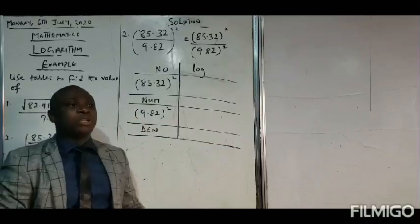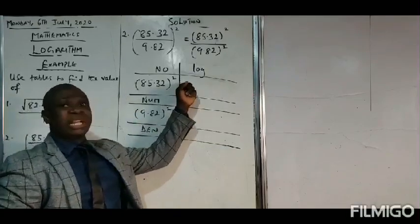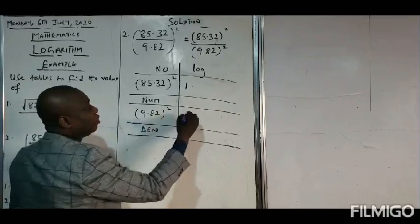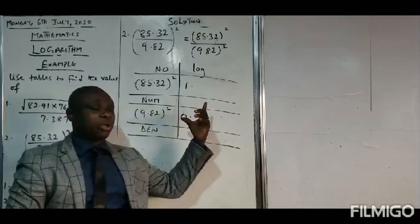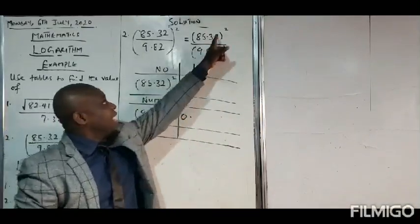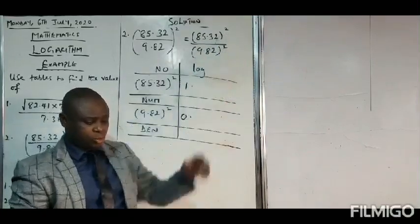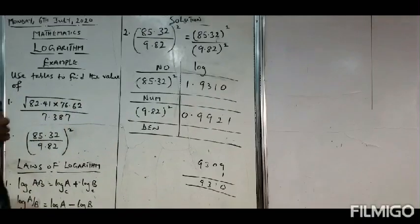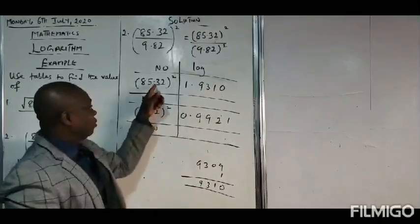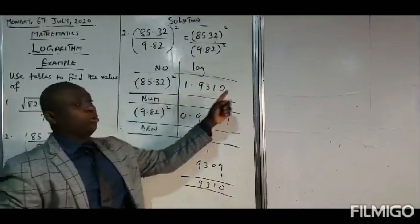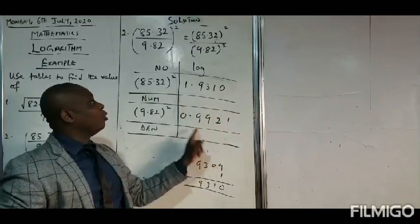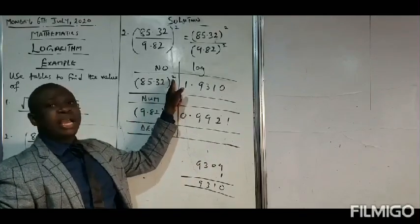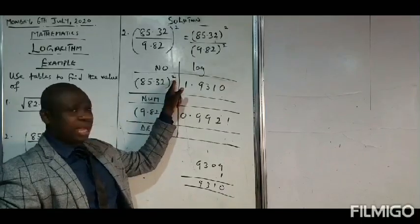Remember, to obtain the log of a number you must first obtain the characteristics. The characteristics of the numerator 85.32 is one point, and the characteristics of the denominator 9.82 is zero point. Here I don't have any multiplication, addition, or subtraction — just single numbers for both numerator and denominator. I'll use the log table to find the decimal part, but these values cannot be the overall answer yet, because both the numerator and denominator have an exponent of two.